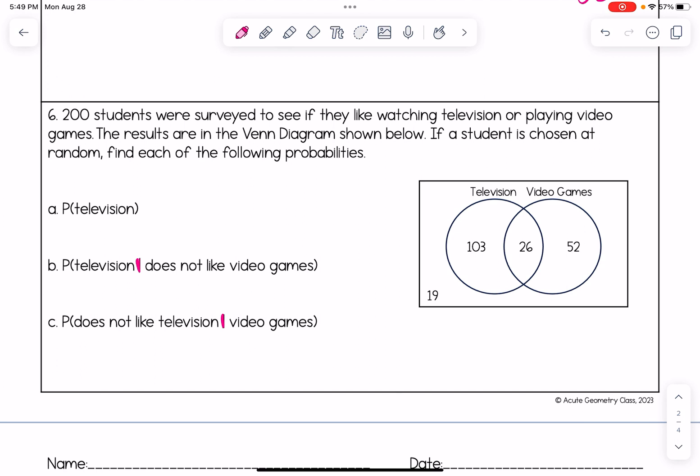The probability of selecting television. How many students like television? That's 103 plus 26. So that gives me 129. How many total students were there? 200. I'm going to erase what I circled now. So I'm just focusing on the piece that is relevant to each question here.